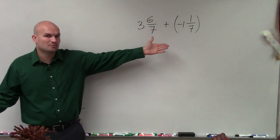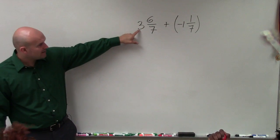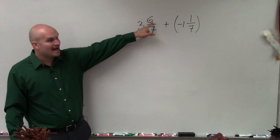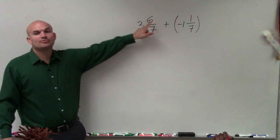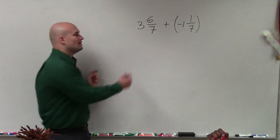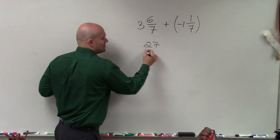So to find the numerator in the improper fraction, you take your denominator, multiply it by your whole number, and add your numerator. So 7 times 3 is 21, plus 6 is 27. 27 is now my new numerator, and I'm going to always keep the denominator.